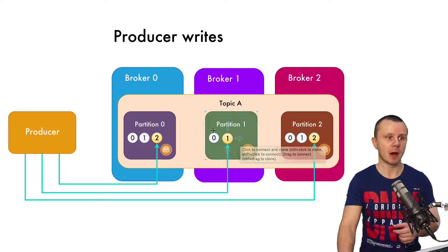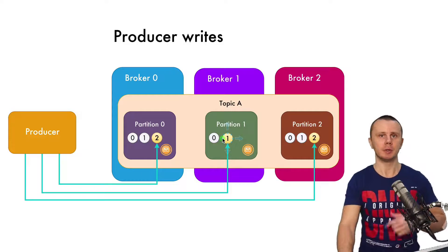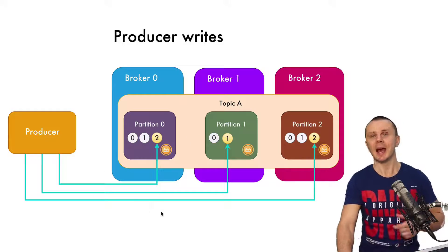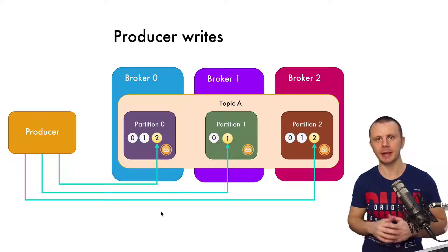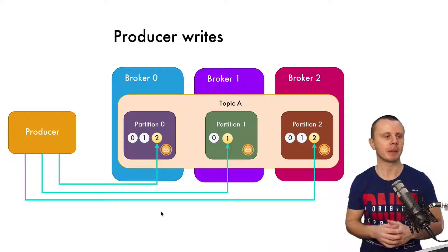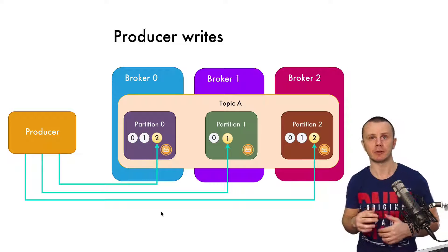Existing messages with offset numbers zero and one are immutable, and any producer is not able to change those messages. They are immutable. That's the main idea behind the creation of messages inside every partition.